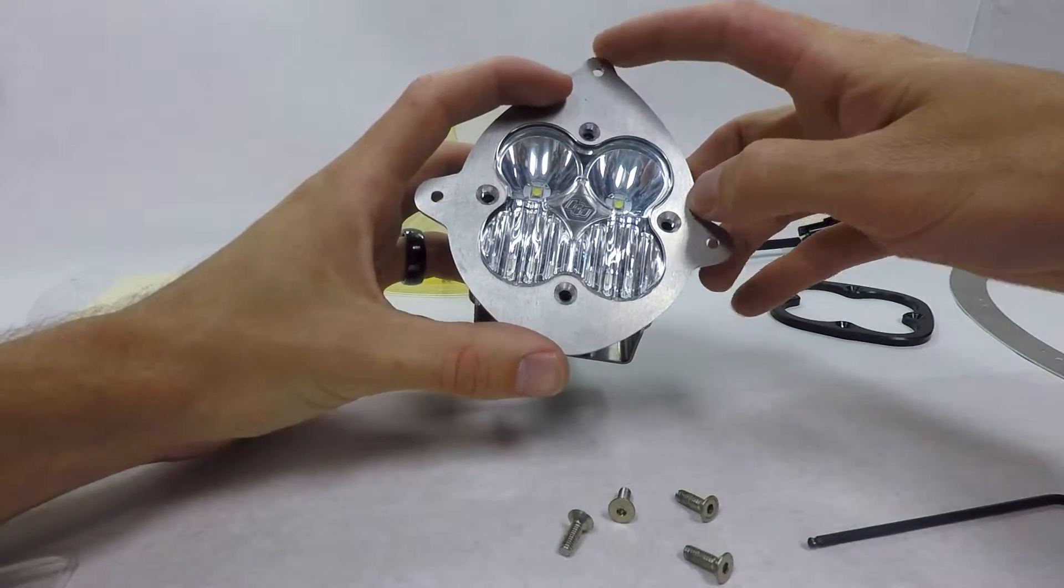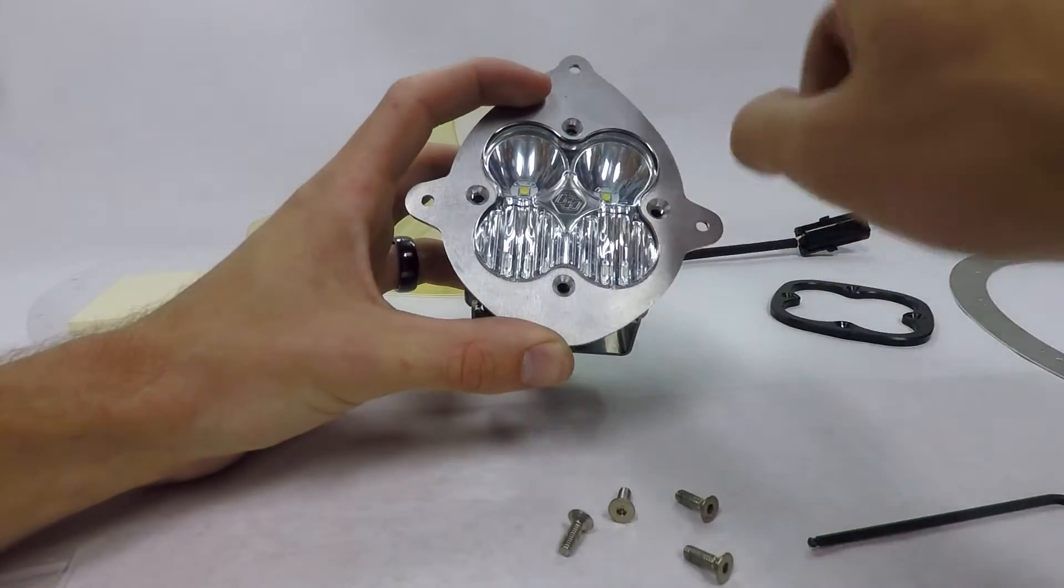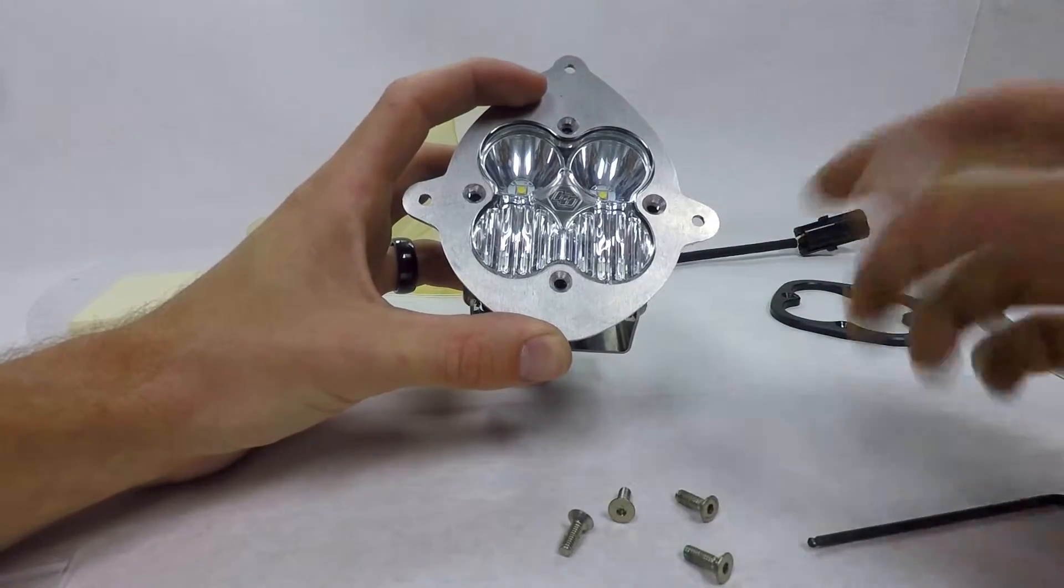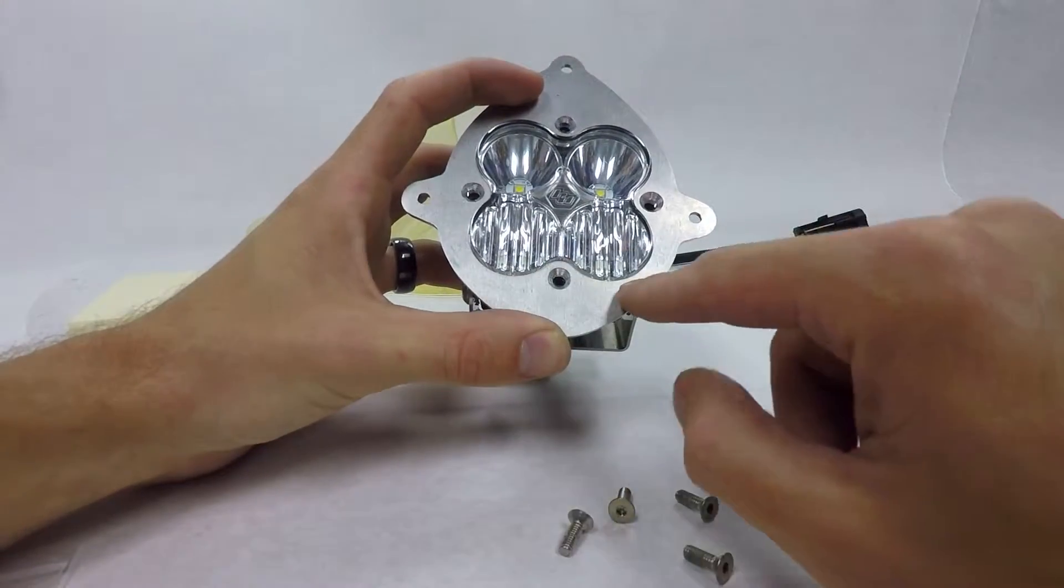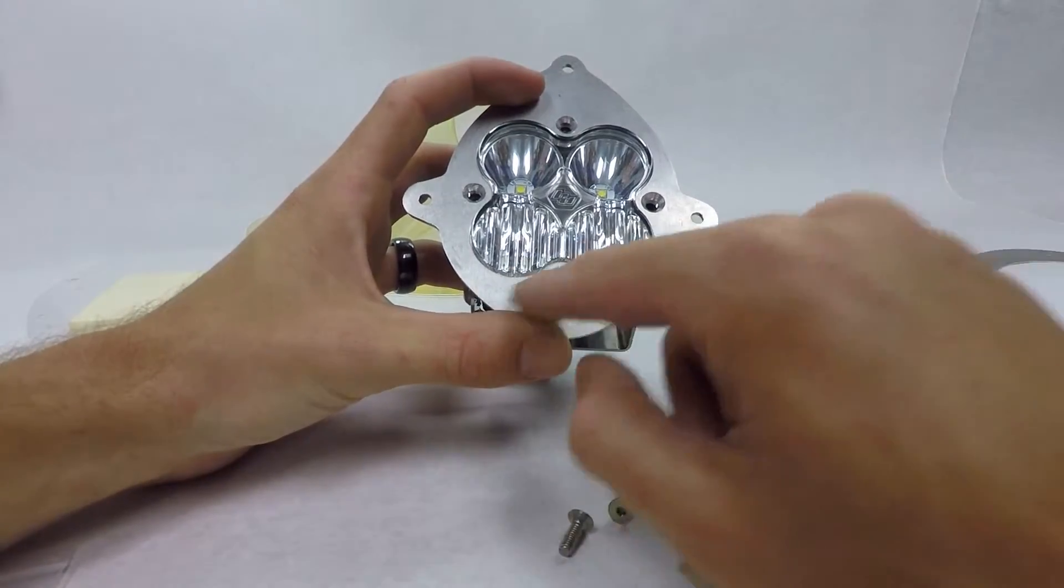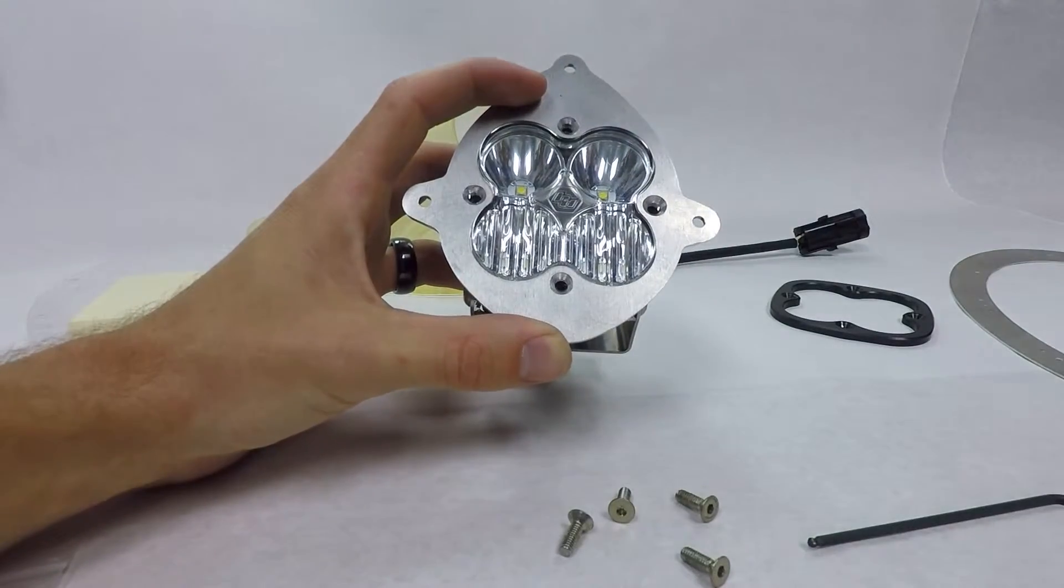You're going to want your third mount hole up to the top by your two clear lenses. That's going to allow your two spots to be on the top, your two driving combos. The spread out light will be down at the bottom. So you have your spread out light across the bottom and you'll have your two floods going straight down over top.